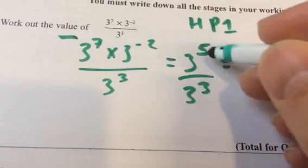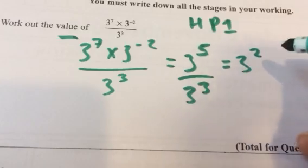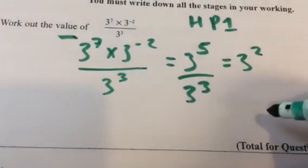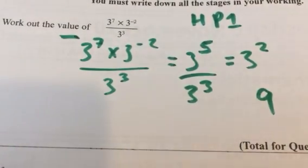So 7 minus 2 will be 3 to the 5 over 3 cubed. And when we divide the bases, we're going to subtract. We're going to end up with 3 squared. But we've got to watch out that the question actually said work out the value, not simplify, so the answer is 9.